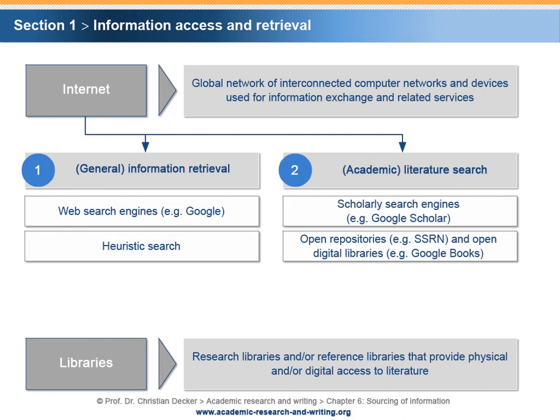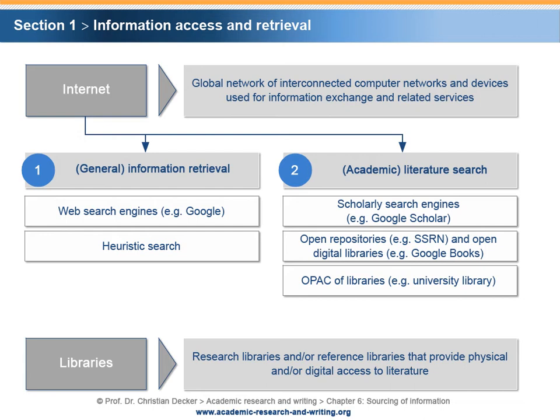Open repositories, for example the Social Sciences Research Network, as well as open digital libraries, for example Google Books, provide the free search, access and retrieval of literature. An Open Access Public Catalogue, or OPAC, is a web-based library catalog, for example of a university library, that allows searching for literature. Some information might be retrievable in an electronic format; other literature can exclusively be accessed in physical form in the library.